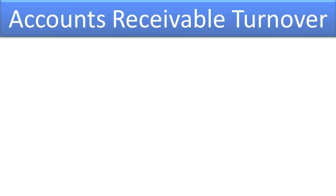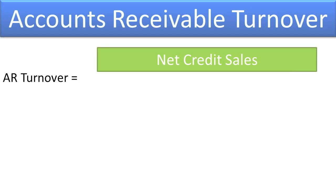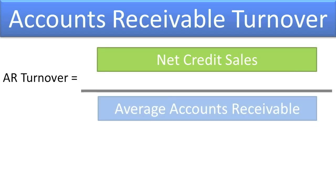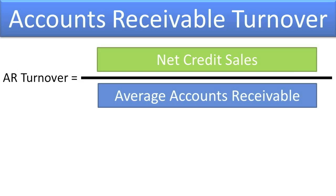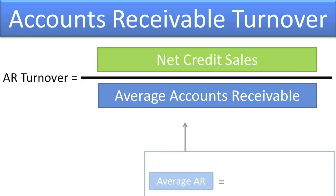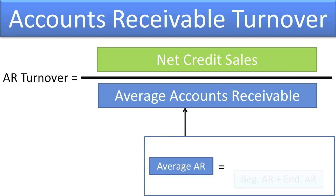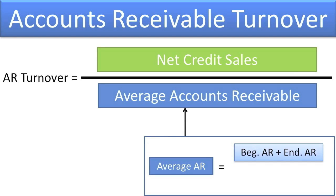How do you compute the accounts receivable turnover ratio? The accounts receivable turnover ratio is computed as follows: net credit sales divided by average accounts receivable, where average accounts receivable is equal to the beginning accounts receivable plus the ending accounts receivable, divided by 2.